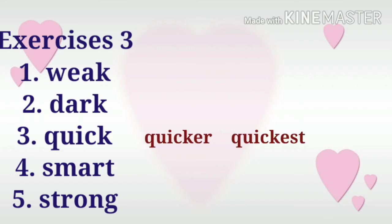Let's now move to number three. The word is quick. The comparative degree of quick is quicker — we add ER at the end of the word. In the superlative degree, we add EST at the end of the word quick, so it becomes quickest. So: quick, quicker, quickest.